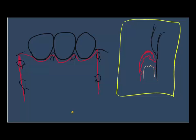There is another technique called the Newman Flap. It is not very different from the Widman Original Flap. The only difference is that instead of cutting a reverse bevel incision, you go from the intracrevicular approach so you don't damage the gingival tissues — you go into the sulcus and cut. The same procedure is otherwise performed.